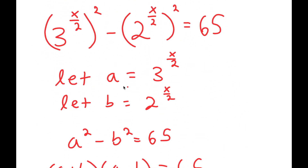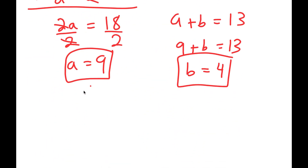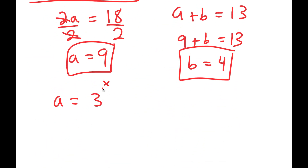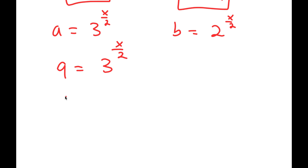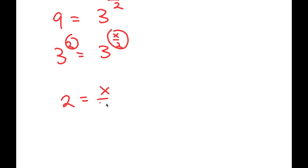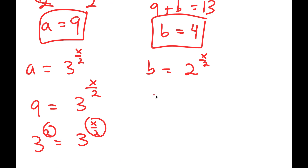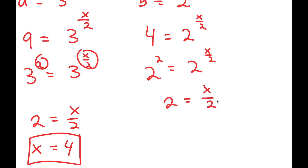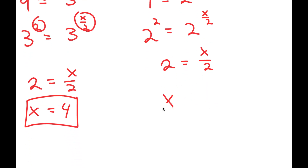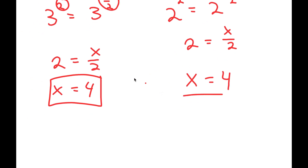Now remember, a equals 3 to the power of x over 2 and b equals 2 to the power of x over 2. Since a is 9, I get 9 equals 3 to the power of x over 2. And 9 is the same as 3 squared, so 3 squared equals 3 to the power of x over 2, meaning 2 equals x over 2, so x equals 4. For b: 4 equals 2 to the power of x over 2. Since 4 is 2 squared, I get 2 squared equals 2 to the power of x over 2, meaning 2 equals x over 2, and again x equals 4. This proves that x is equal to 4.